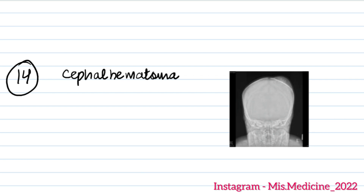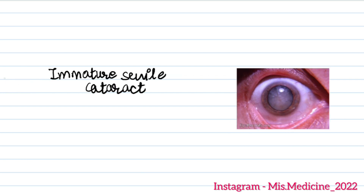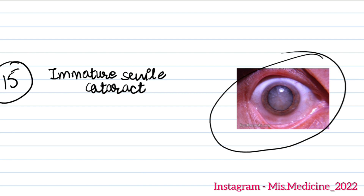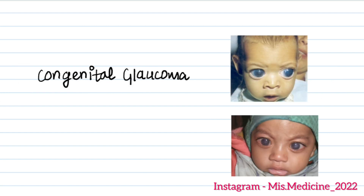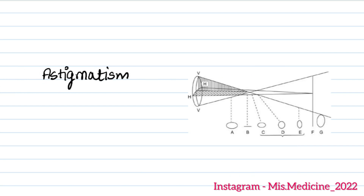Question 15 was a diabetic patient with immature senile cataract — again a very large set of options. Question 16 was congenital glaucoma, and question 17 was astigmatism.